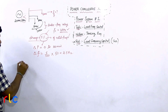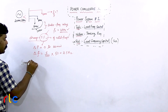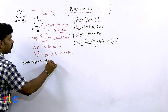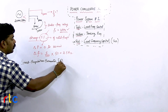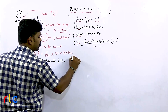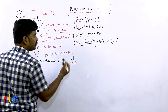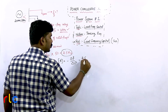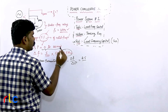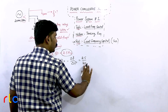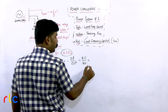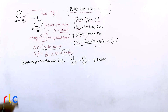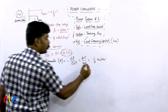Next, we find the speed regulation parameter R, which is defined as: R = −(change in frequency from no load to full load) / (change in load from no load to full load). So R = 2.5 hertz / 20 megawatts = 1/8 hertz per megawatt. This is the speed regulation parameter for this system.